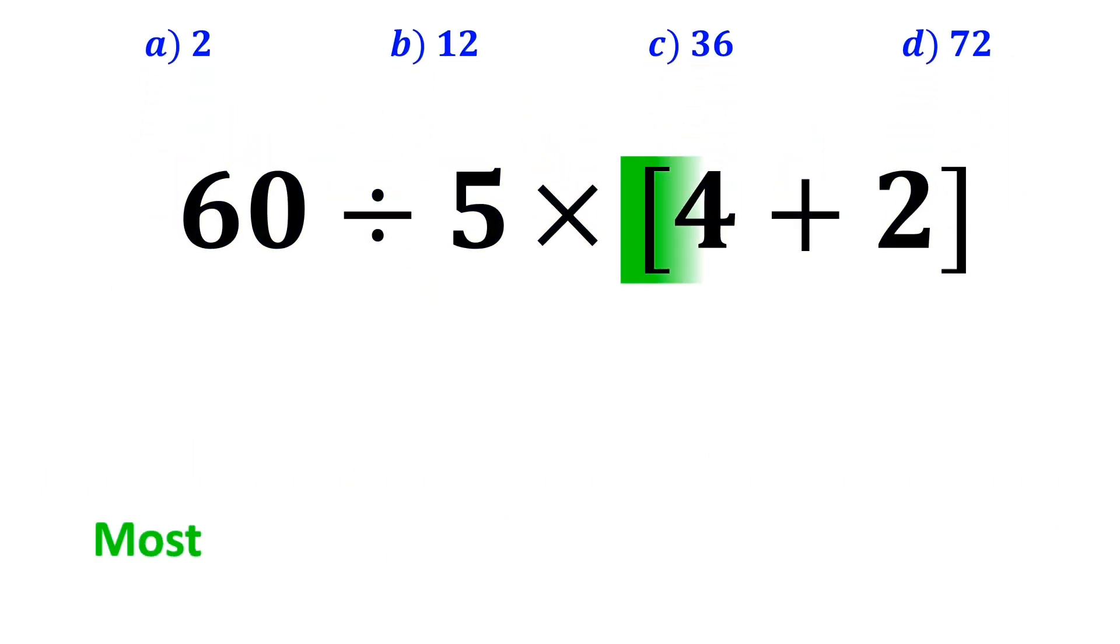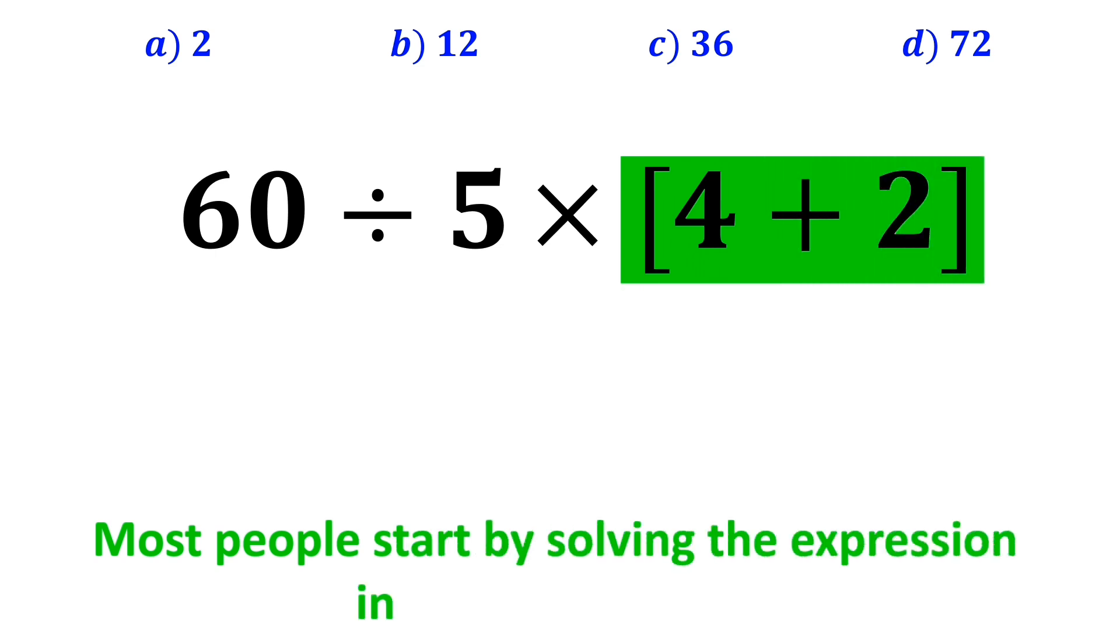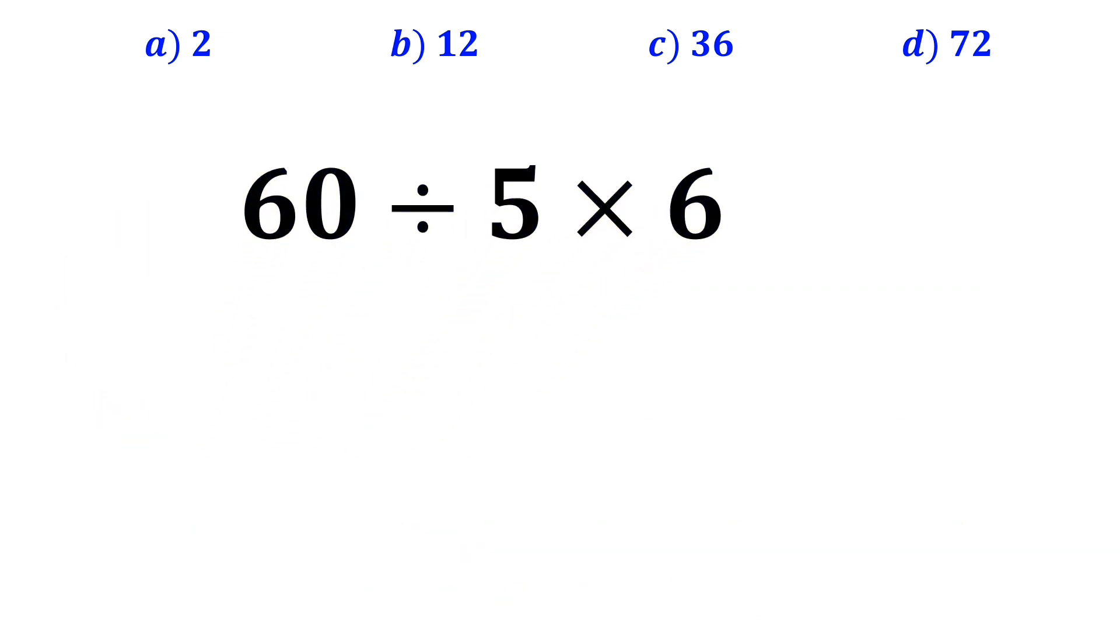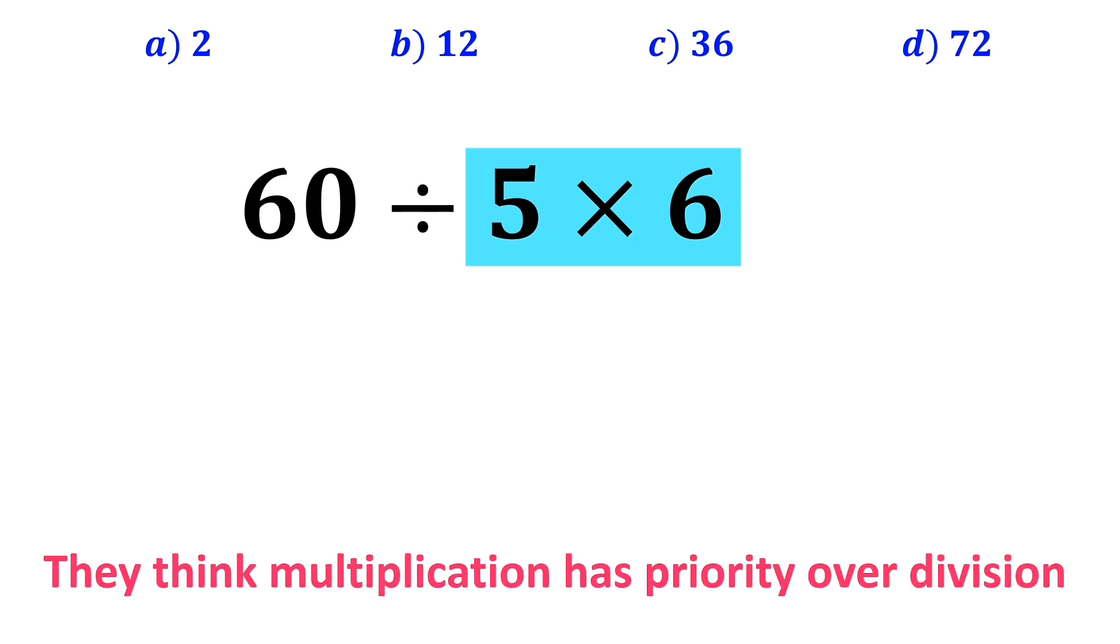Let's take a closer look and solve it together. In the first step, most people start by solving the expression inside the brackets and replace it as 60 divided by 5 times 6. In the next step, they go for the multiplication between 5 and 6, because they think multiplication has priority over division.